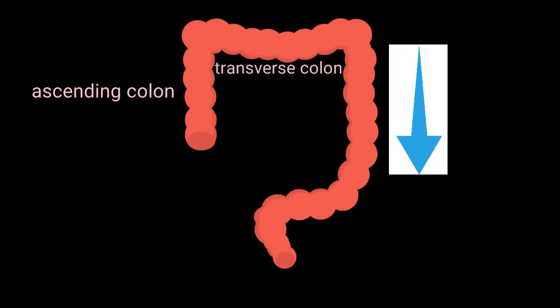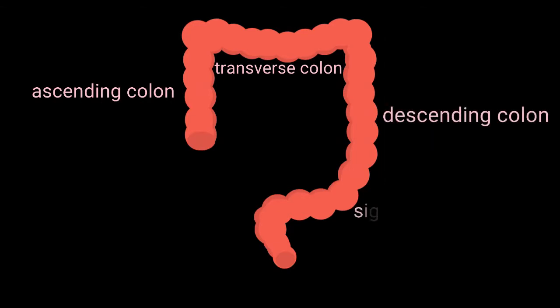The colon is divided into several parts. The part that goes upwards is called the ascending colon, and then it moves to the left, that's called the transverse colon. It comes down, it becomes a descending colon, then the sigmoid colon, and finally, the last part of the colon is called the rectum.